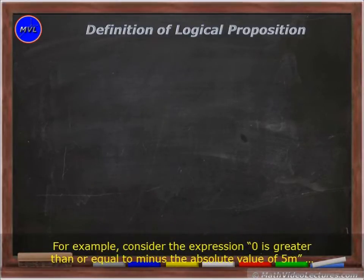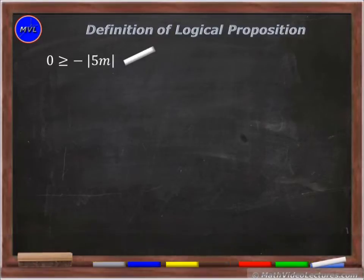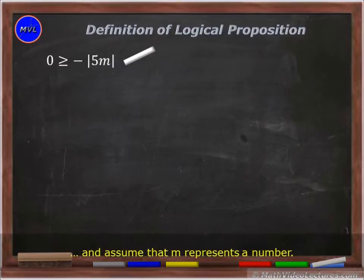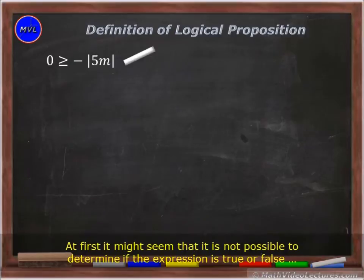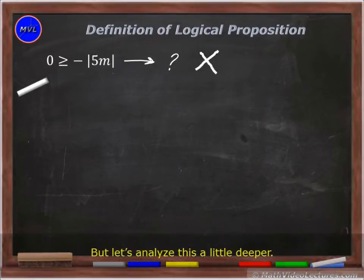For example, consider the expression '0 is greater than or equal to negative the absolute value of 5m' and assume that m represents a number. At first, it might seem that it is not possible to determine if the expression is true or false without knowing the value of m, and therefore, that it is not a logical proposition. But let's analyze this a little deeper.